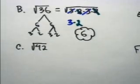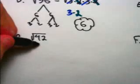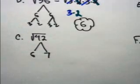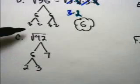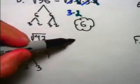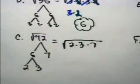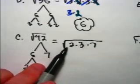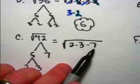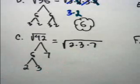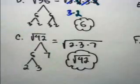Looking at the next problem, the square root of 42. 42 prime factors into 6 times 7, and 6 can be further prime factored into 2 times 3. So the square root of 42 equals the square root of 2 times 3 times 7. It's prime factored and there are no pairs. We don't know what the square root of 2, 3, or 7 is — they're all irrational numbers. There's nothing more to be done; the square root of 42 is already in simplest radical form.